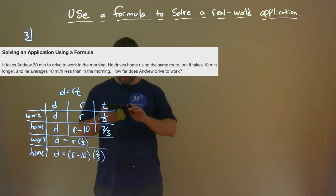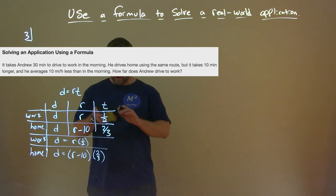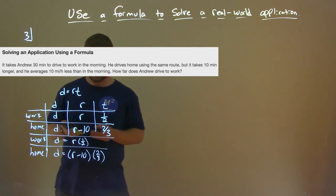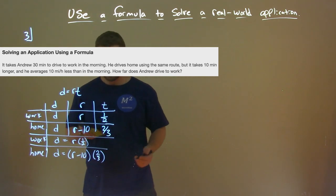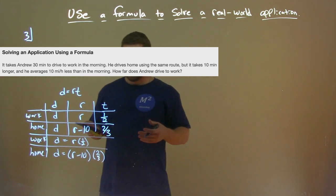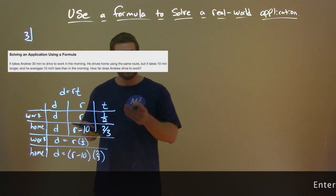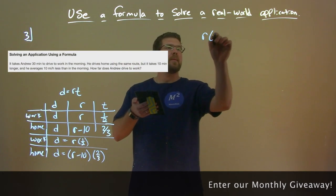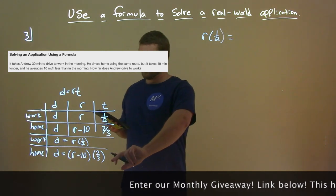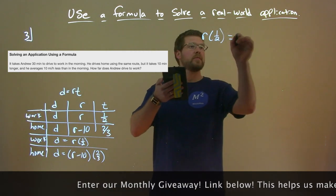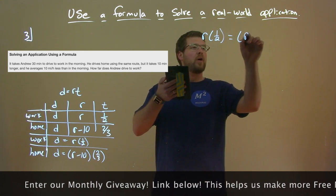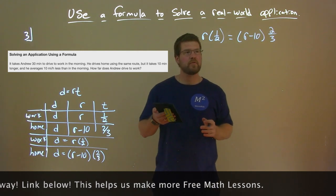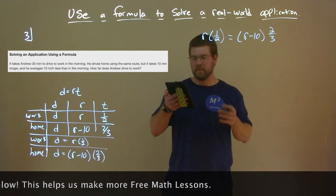They ask how far Andrew drives to work, so we want to find D. We take our two equations and set them equal to each other to find R. So R times one-half equals (R minus 10) times two-thirds. We want to simplify and solve for R. R times one-half is one-half R. On the right-hand side, distributing two-thirds gives us two-thirds R minus 20 over 3.